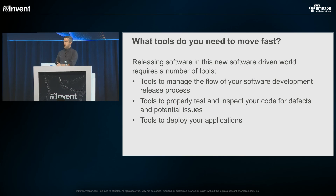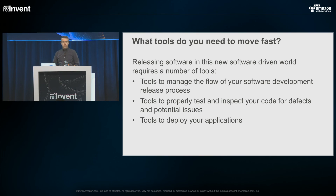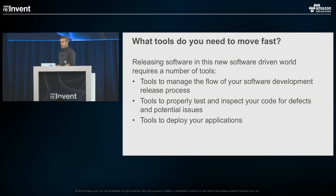So what do you need to enable this model? There are a number of different tools you need to support the ability to move really fast and accelerate your delivery: tools to manage the flow of your software development, tools to properly test, inspect, and confirm that your code is working the way you expect, and tools to deploy your application — which can vary greatly depending on what your application is.